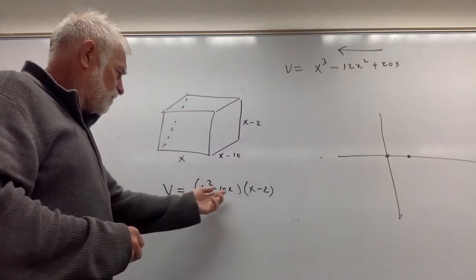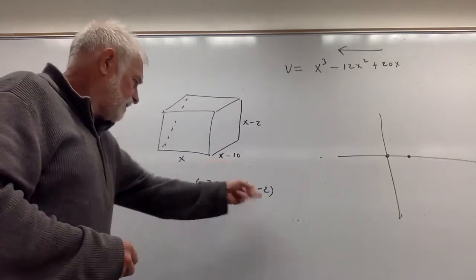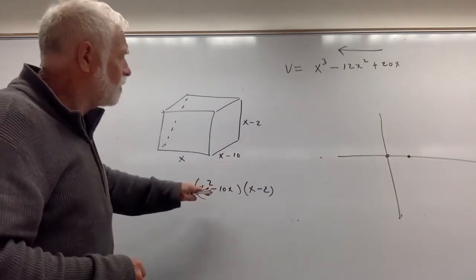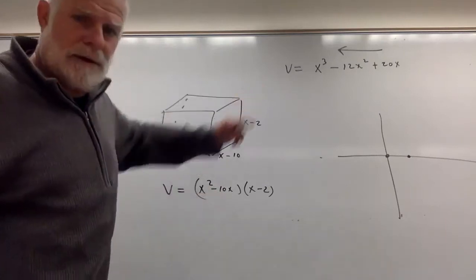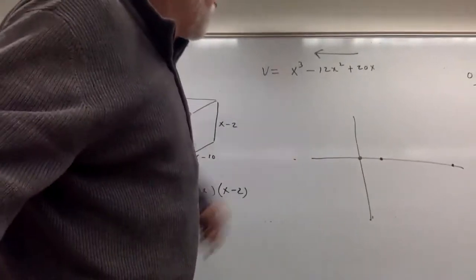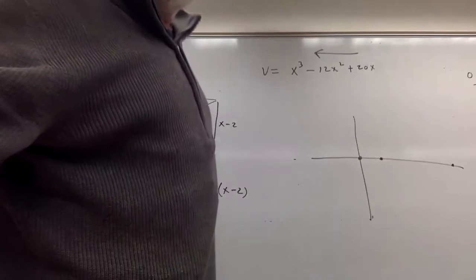If we multiply this out, we get x² - 10x times x - 2. When you multiply that out, you get x³ - 12x² + 20x. And we should get a little sense of what that graph looks like.